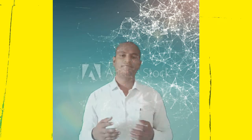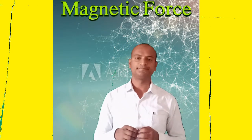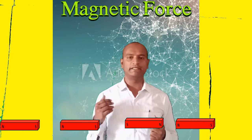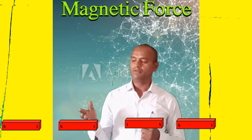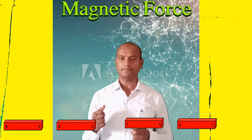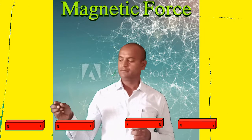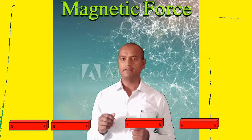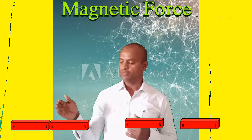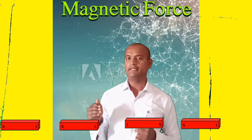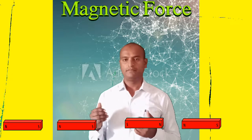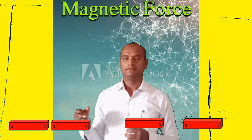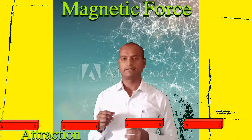In types of field forces, the first one is magnetic force. By observing this activity we will learn about magnetic force. There are bar magnets — when you bring the opposite poles of a bar magnet towards another, they move towards each other, meaning they attract each other. Why? Because opposite poles attract each other.